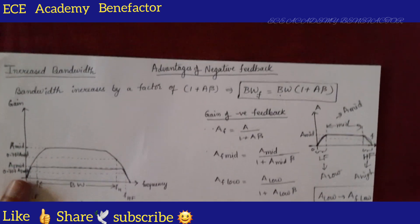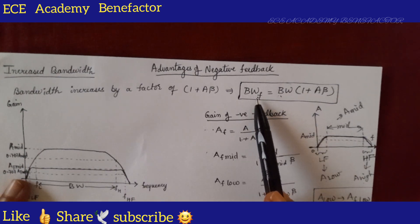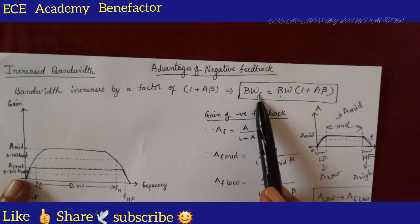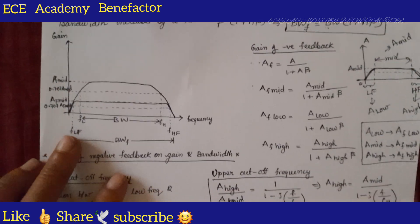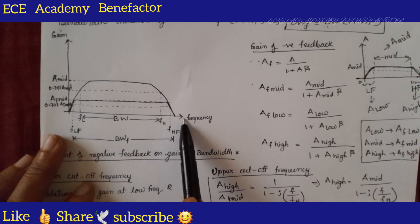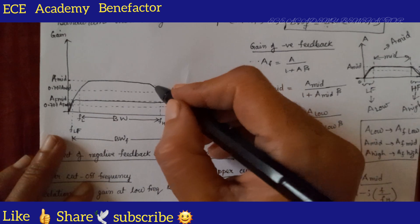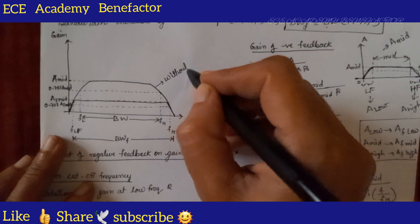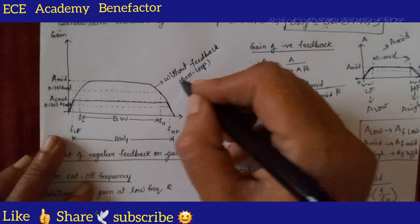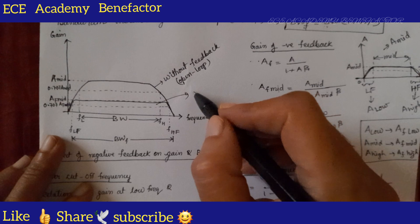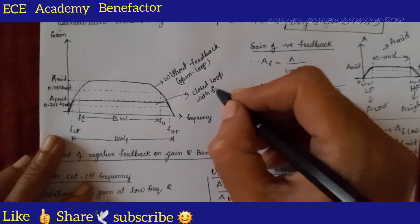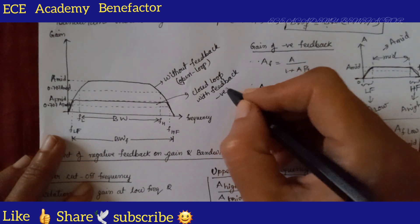Looking first at the mathematical equation: bandwidth with feedback equals BW times (1 plus A·beta), where BW is the bandwidth without feedback and BWf is the bandwidth with feedback. Now coming to the graphical representation — the y-axis is gain and the x-axis is frequency. The first graph is without feedback, that is the open loop circuit. The second graph is for the closed loop, meaning with negative feedback.